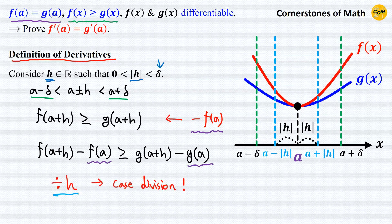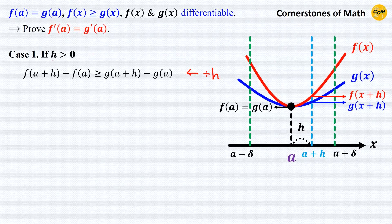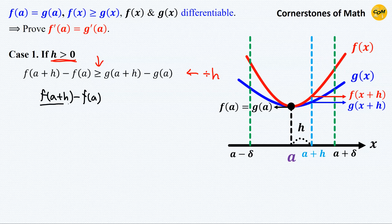The next step is dividing both sides by h, but we have to divide into cases for that. Case 1: if h is positive, then dividing by h does not change the direction of the inequality sign. So we have [f(a + h) - f(a)] / h is greater than or equal to [g(a + h) - g(a)] / h.